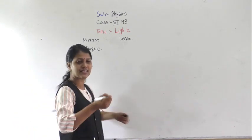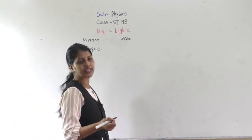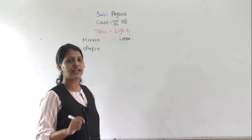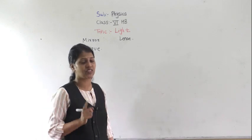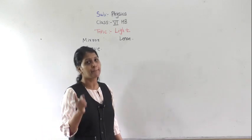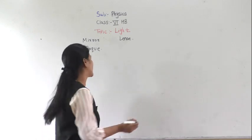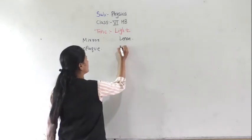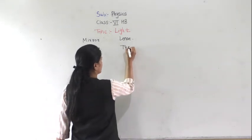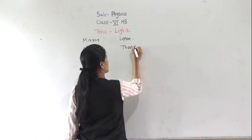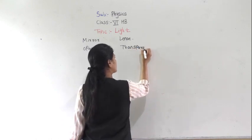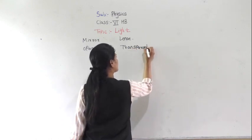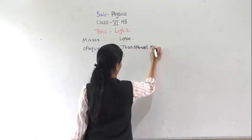While lenses are transparent objects — they are made of transparent material.